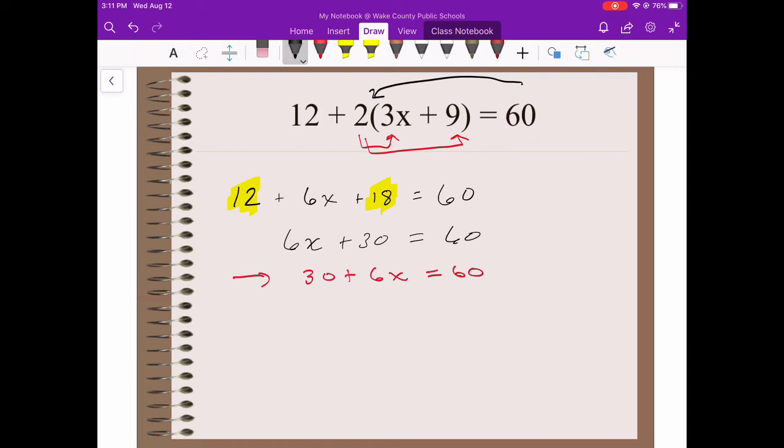Notice that I have the x on the left side and I want to get that variable by itself. So that means I want to get rid of the addition. How do I unadd? I subtract. So 6x plus 30 equals 60, subtract 30 from both sides. Those cancel. 6x is equal to 30. Just a reminder, when I say they cancel, it means they add up to 0.